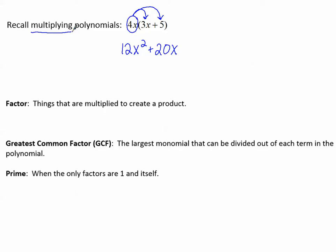Before we multiplied, we had factors. Factors are things that are multiplied to create a product. For example, the 4x is a factor, and the binomial 3x plus 5 is a factor. We multiplied the 4x to the binomial 3x plus 5.